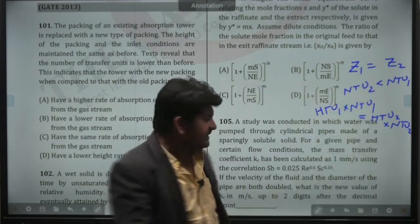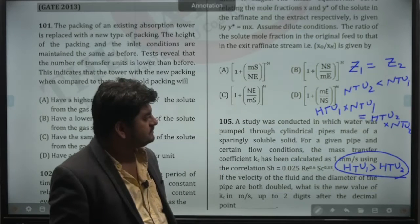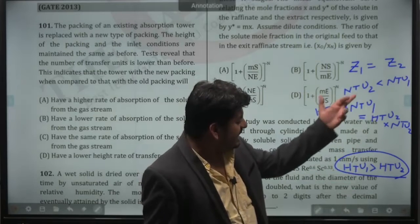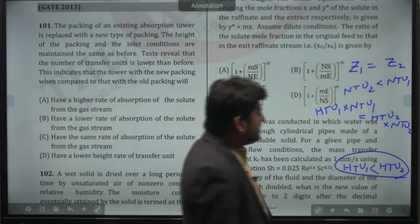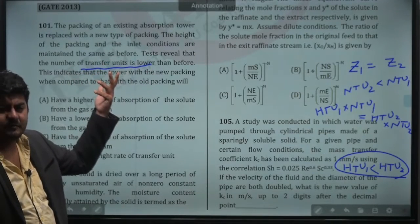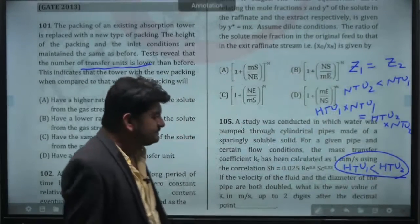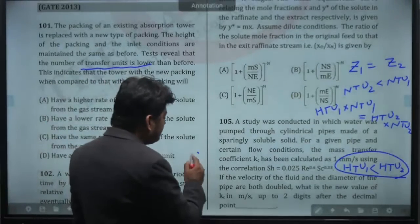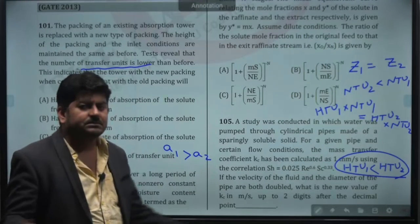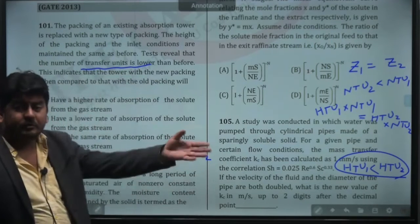They said that NTU2 is less than NTU1, so it is obvious. NTU1 will be greater than NTU2. And if NTU2 is small, HTU2 will be large. Number of transfer unit has been lowered than before, so obviously height of transfer unit will be higher than before. So HTU2 will be greater than HTU1. What is the meaning? If height of transfer unit has increased, then it means specific interfacial area will decrease. And if specific interfacial area has decreased, what is the point?